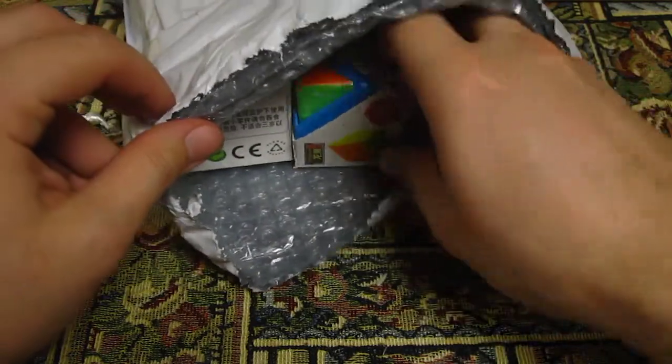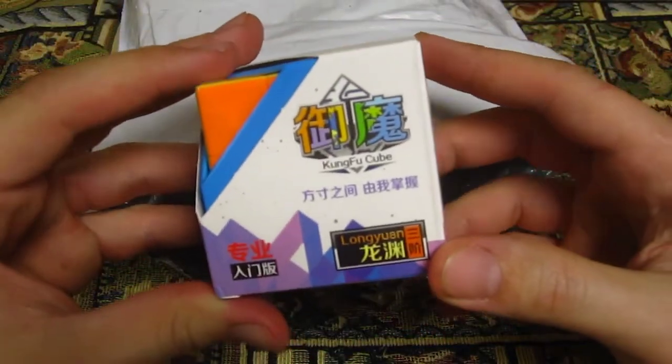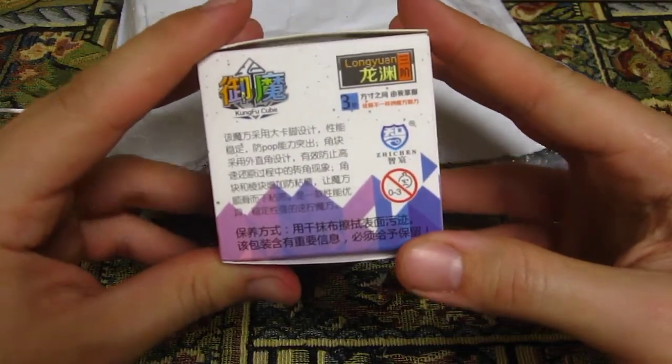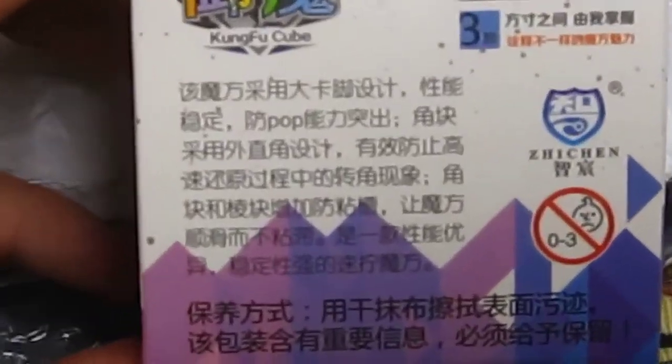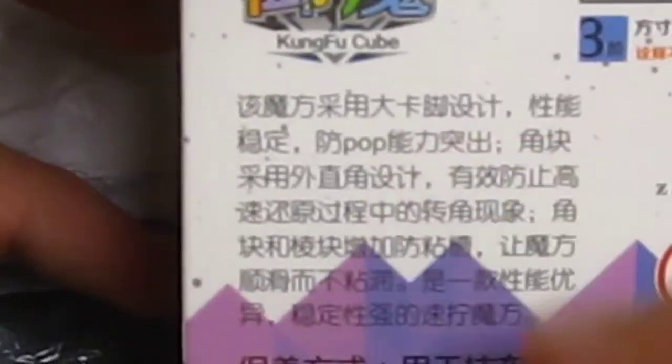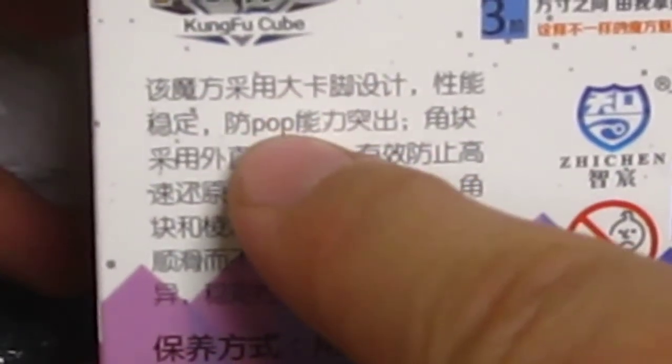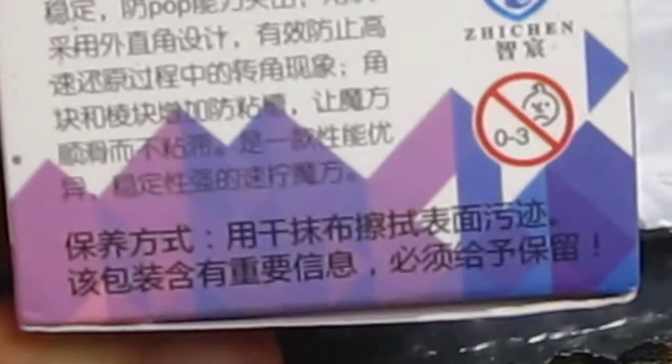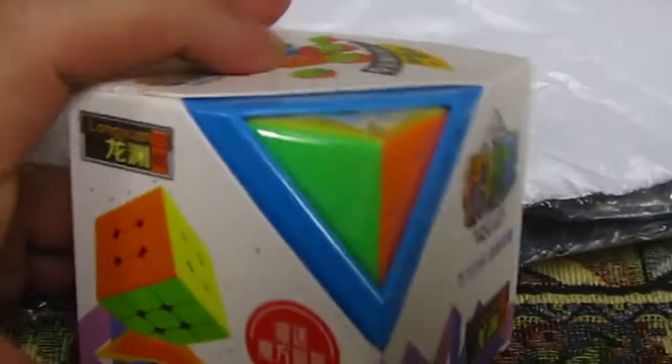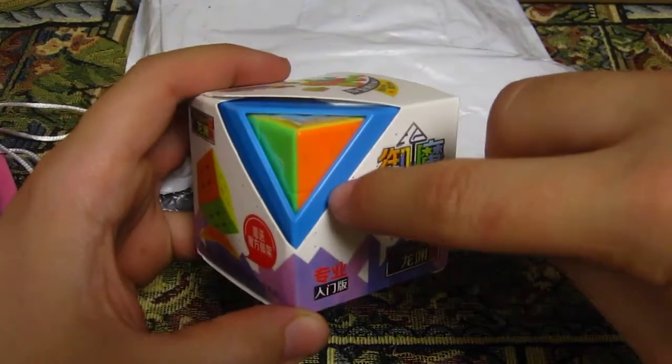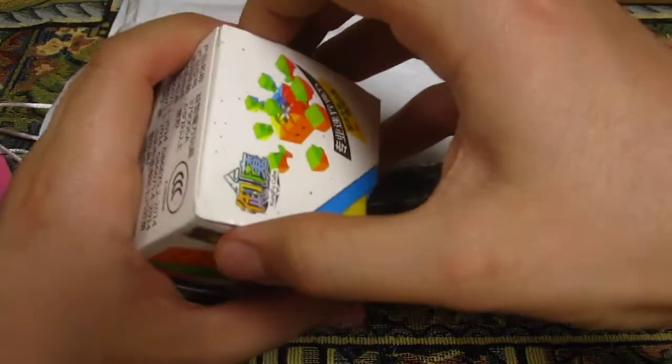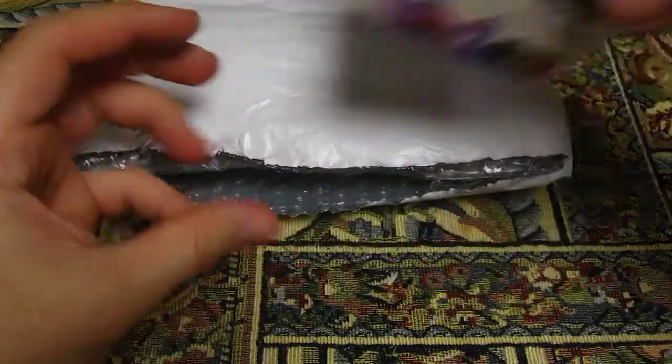So next out of the box we have Kung Fu Cube Kung Fu Long Yan. Okay, this is really interesting. I just saw there's a whole bunch of Chinese and it says pop right in the middle. That's pretty funny. So yeah, anyway, I can see that there's a cube stand included in this. So well, let's get the other stuff out of the package, shall we?